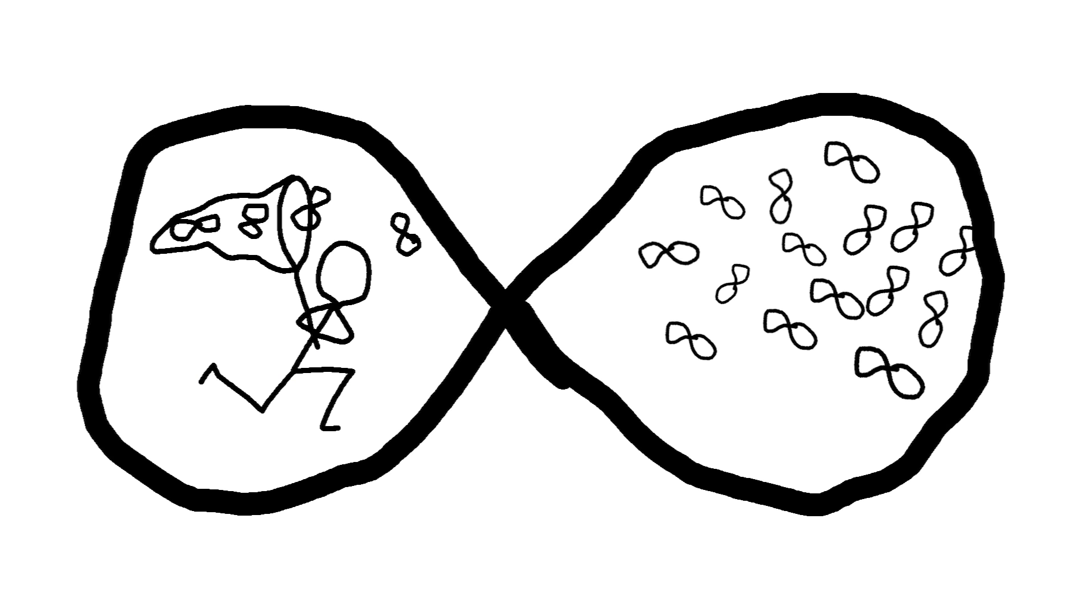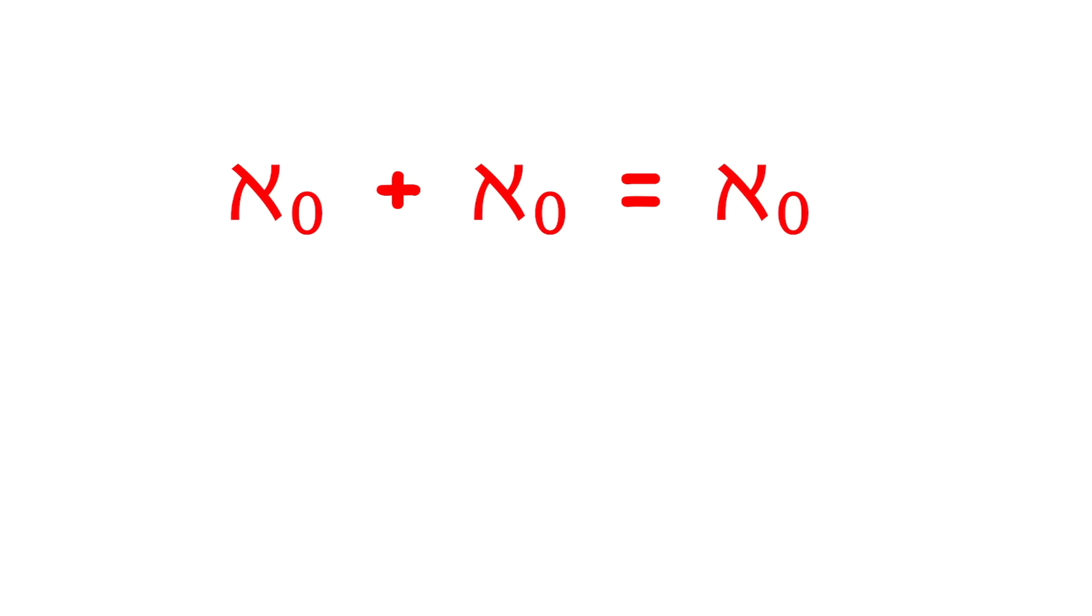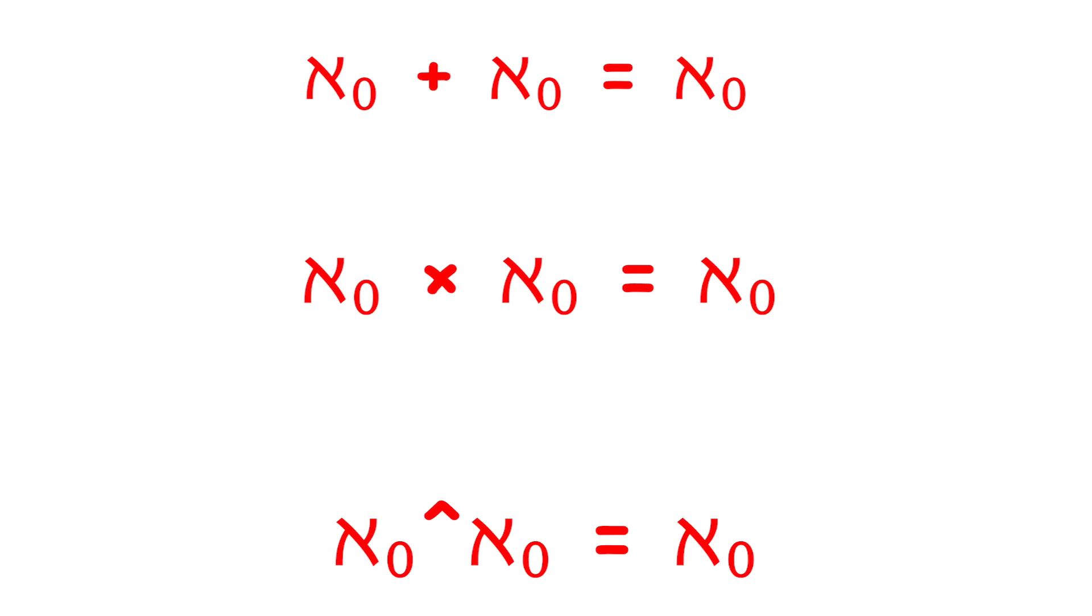Aleph null is closed under addition, multiplication, and exponentiation. For example, aleph null plus aleph null equals aleph null, and aleph null times aleph null equals aleph null, and aleph null to the power of aleph null is aleph null.